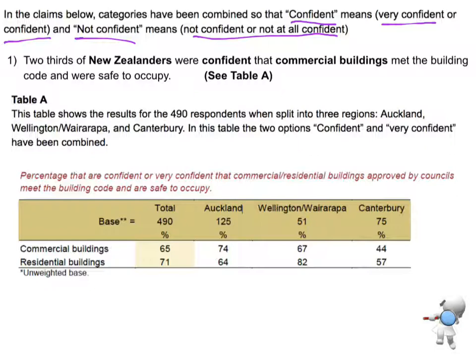So we want to test this claim that two-thirds of New Zealanders were confident that commercial buildings met the building code and were safe to occupy. And they said refer to Table A. So I've copied in here Table A. So we've got results there for 490. So the first thing I notice is that's my sample size, N1 is 490.